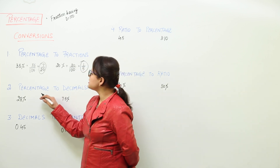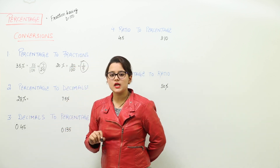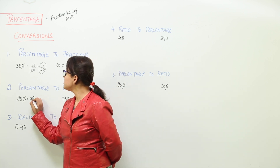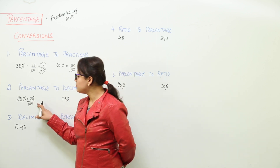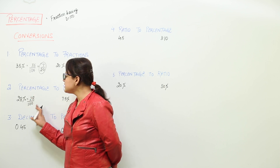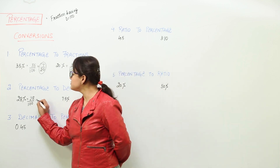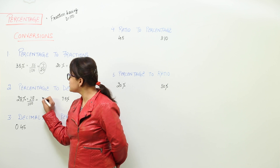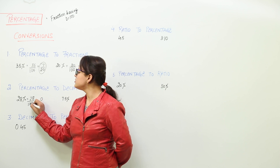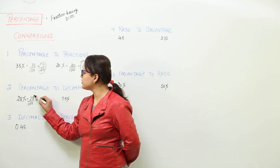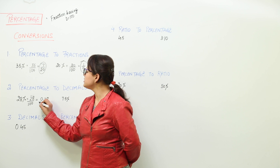The next is the percentage conversion to decimals. First of all you have to get rid of the percentage sign by putting 100 in the denominator. Now this has been converted into a fraction — a decimal fraction because it has a denominator in the powers of 10. We just count the number of zeros in the denominator and start counting from the rightmost digit of the numerator. Two zeros are present, so after two places we put a decimal point, giving us 0.28.